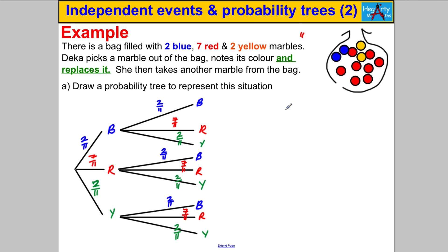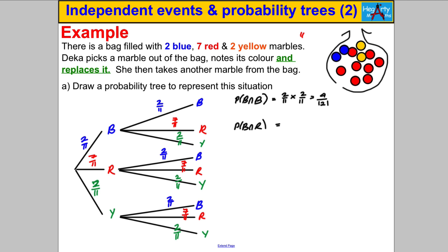To complete my probability tree I'm going to list all the combinations of outcomes of the two marbles and work out their probabilities. The first one gives me the probability of blue and blue: two elevenths multiplied by two elevenths, which equals four over 121. Next is the probability of blue then red: two elevenths times seven elevenths, which equals 14 out of 121. And I will continue for each outcome.